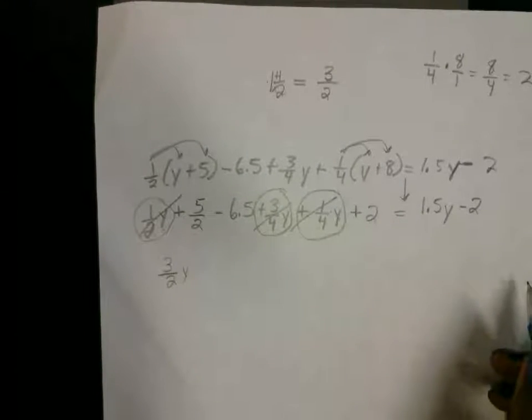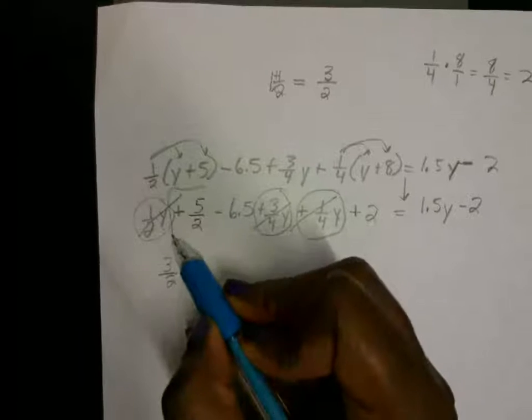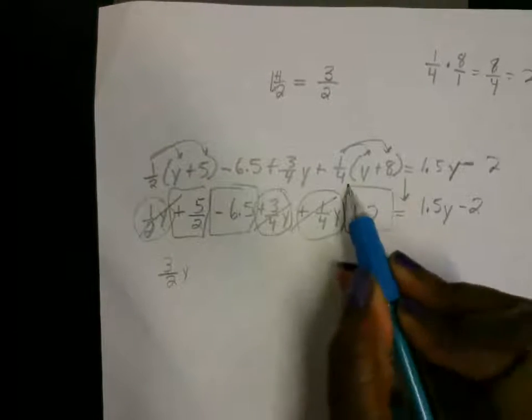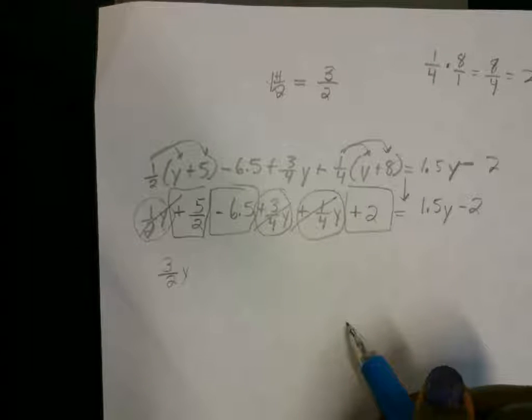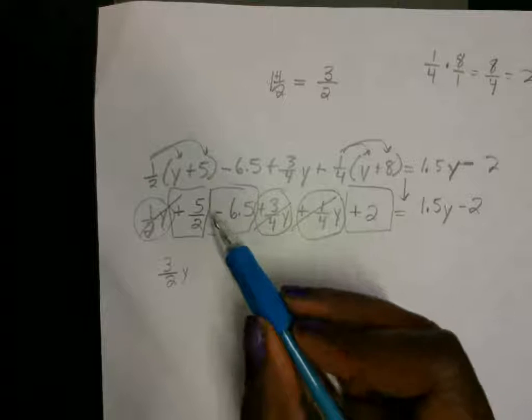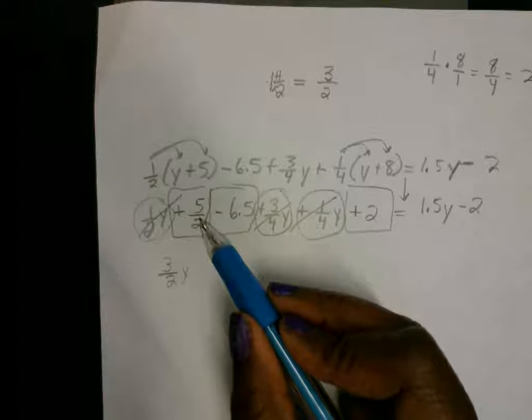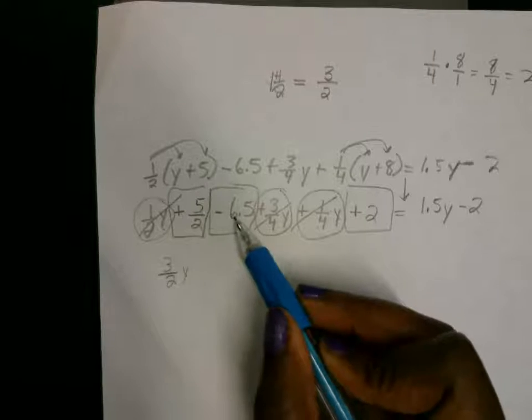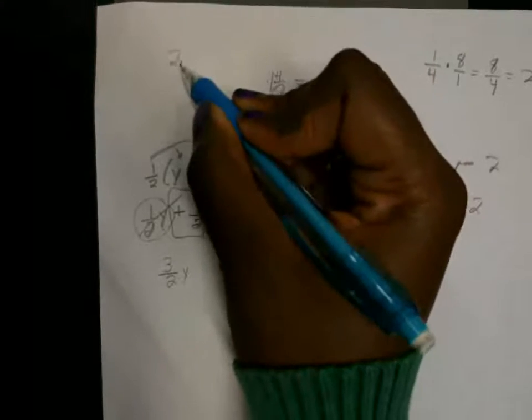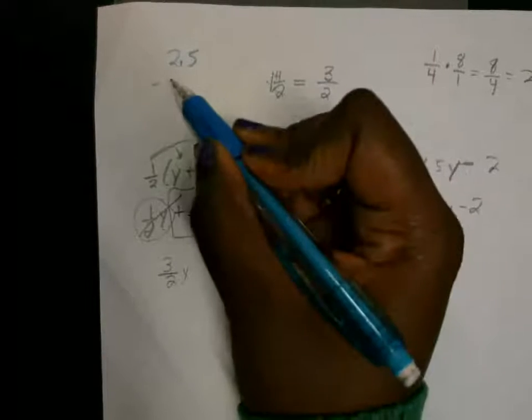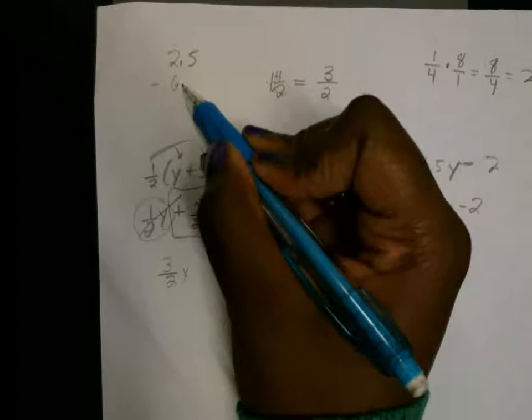We combine all the terms together. Now we can combine these terms. Combine the easiest two together. I could have just wrote it as a decimal, right? This is 2 and one-half. We got 2 and one-half, 2.5, and then we got minus the 6.5.